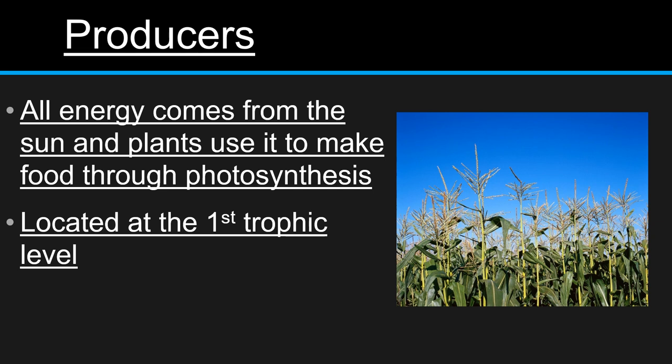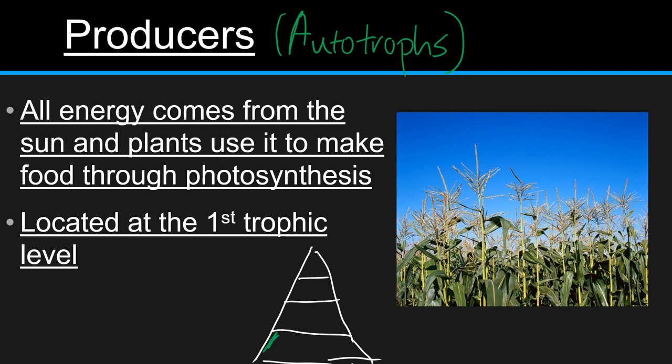Producers, also known as autotrophs, are going to get all their energy from the sun. Plants use it to make food through photosynthesis. And this is going to be located at the first trophic level. So if we have an energy pyramid, which we'll discuss more in our next video, it is going to occupy this bottom layer, right here. And that's going to be our first trophic level.